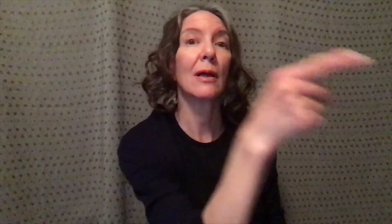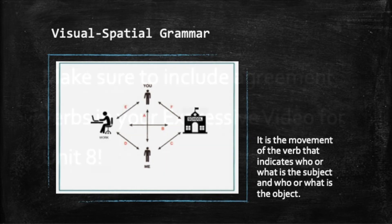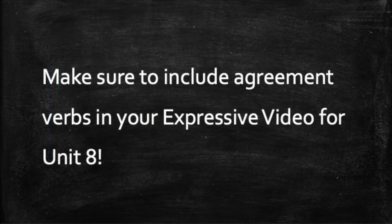But if the concept is about the other person, the verb will move away from the signer. Examples: ride with you, you drop it off, you go by, you go clean, you tell them. When we say that ASL grammar is visual-spatial, this is what we mean — the movement of the verb in the signing space indicates who or what is the subject and who or what is the object. Make sure to include agreement verbs in your expressive video for Unit 8.